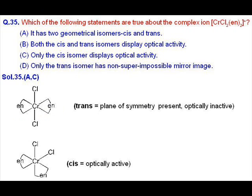Question number 35 is about geometrical isomerism of coordination complex. So it will show two geometrical isomers, cis and trans, and the cis isomer will display optical activity. The trans isomer will have a plane of symmetry and will be optically inactive and will be superimposable on its mirror image. So the answers correct are A and C.